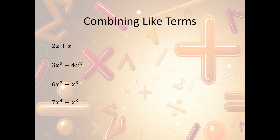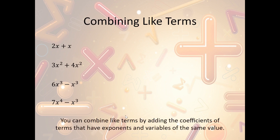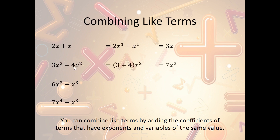Now, combining like terms. The rule is: in order to combine like terms, they have to have the same exponents and same variables, and if they do, we're going to add the coefficients. So for instance, we have 2x and x. They're both x's, so they have the same variables and the same power — really an imaginary exponent of 1. So we can just add these: 2x plus x is 3x. We have 3x² plus 4x² — same variable, powers match — so we just add the coefficients: 3 plus 4, which is 7x².